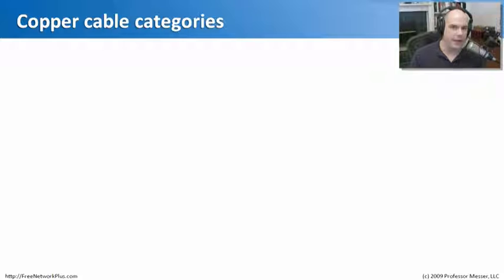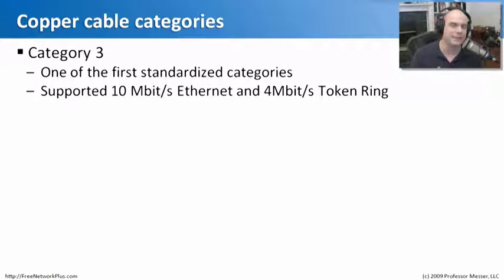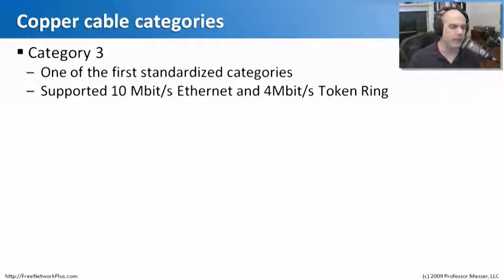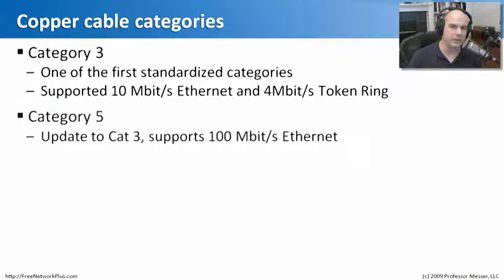If you've done any work with cabling, you've probably heard the terms CAT3, CAT5, CAT6 — that 'CAT' stands for category. The first type of formalized category was Category 3, built when Ethernet and token ring were becoming popular in a twisted pair environment. Category 3 supported 10 megabit Ethernet and 4 megabit token ring — very low speeds compared to today. But at the time, Category 3 allowed us to use those network speeds.